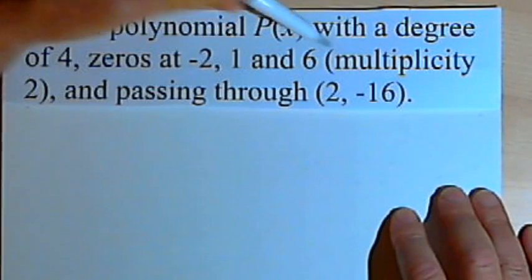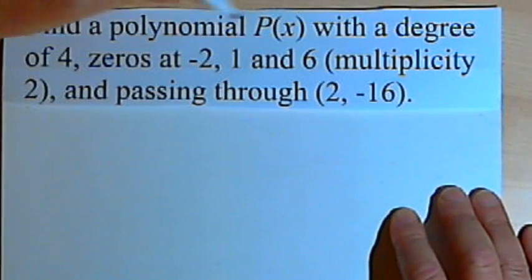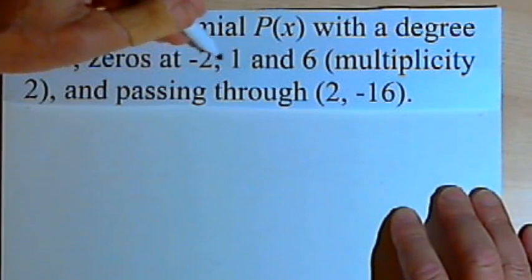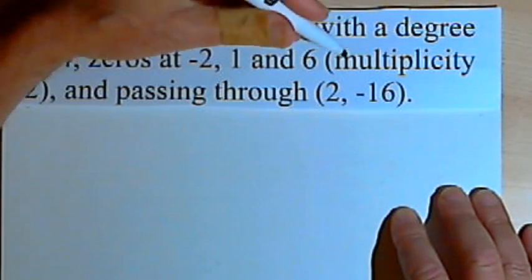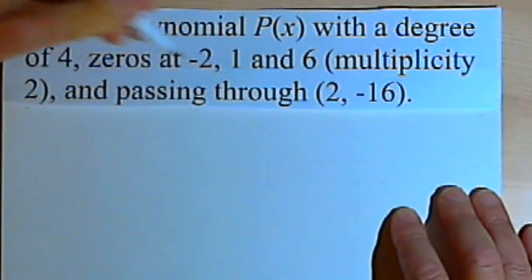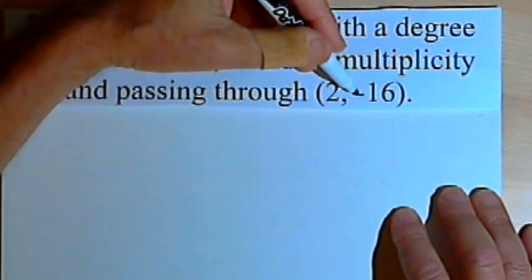This one has a multiplicity in it. Find a polynomial P(x) with a degree of 4, zeros at negative 2, 1, and 6 with a multiplicity of 2, and passing through (2, -16).